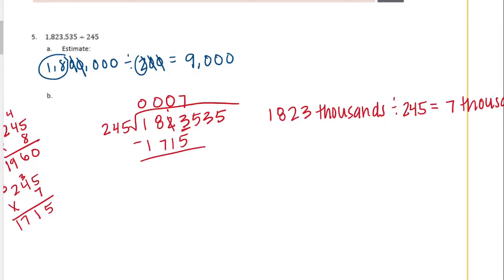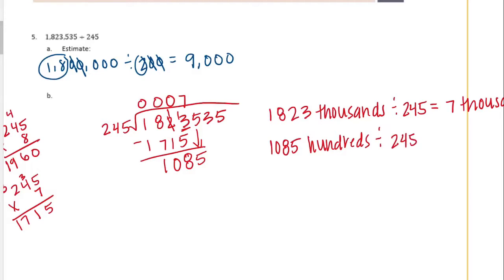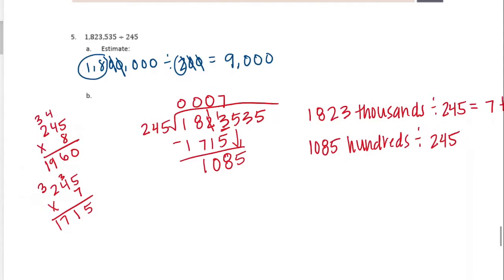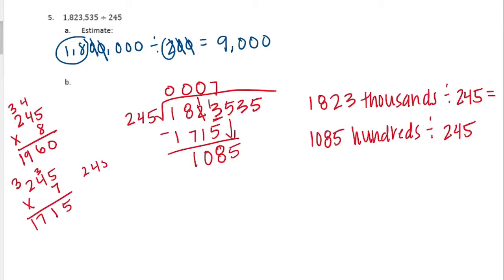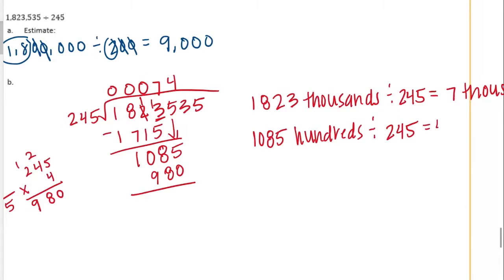Let's keep subtracting. 13 minus 5 is 8, 1 minus 1 is 0, 8 minus 7 is 1. Bring down the 5, so we now have 1,085. The 5 is in the hundreds place. Divide it by 245. 245 can go into 1,085 — let's try 4 times. 245 times 4: 4 times 5 is 20, carry the 2. 4 times 4 is 16, plus 2 is 18, carry the 1. 4 times 2 is 8, plus 1 is 9. So 980. We can go in 4 times, equal to 4 hundreds.